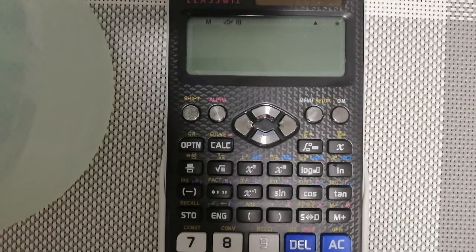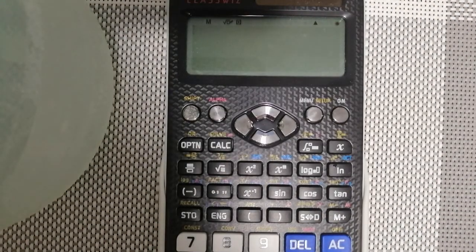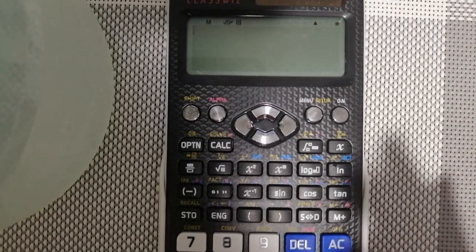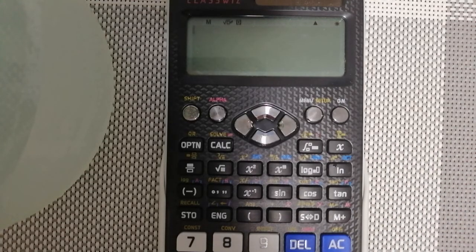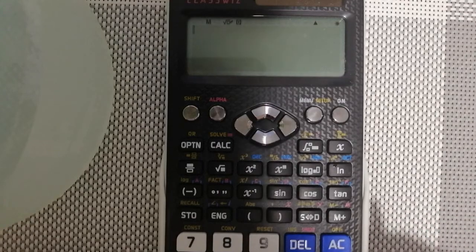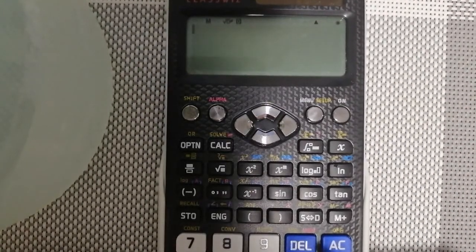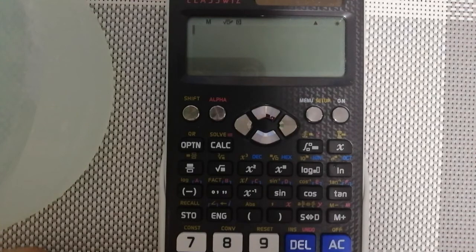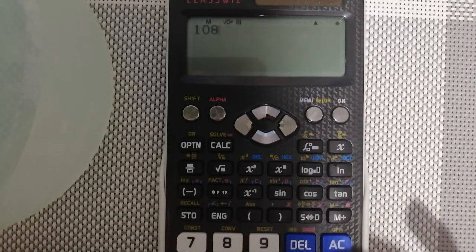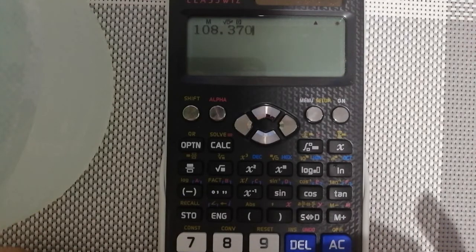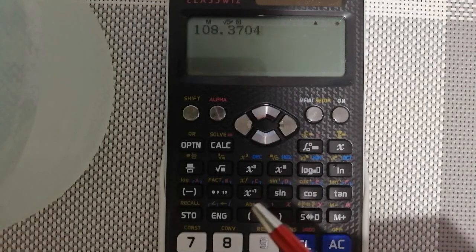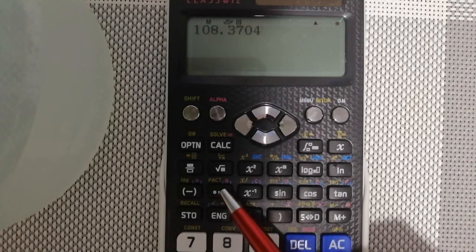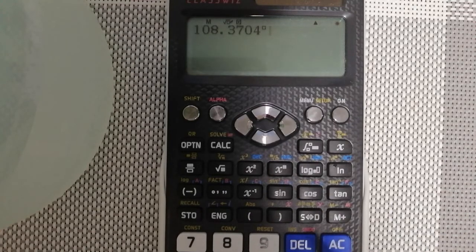I'm using the latest model of Casio. Pero, kahit sa mga previous models, pwede nyo gawin itong pag-convert ng DMS to decimal degrees, vice versa. So, first, I will teach you how to convert the decimal degrees into DMS format. So, yung example natin kanina na ginamit natin ay yung 108.3704. So, usual na pag-i-input natin ng values, ang gagawin ko ngayon ay lalagyan ko ng degrees using this key. So, pag pre-nest ko yan, yan ang lilitaw sa calculator ninyo.